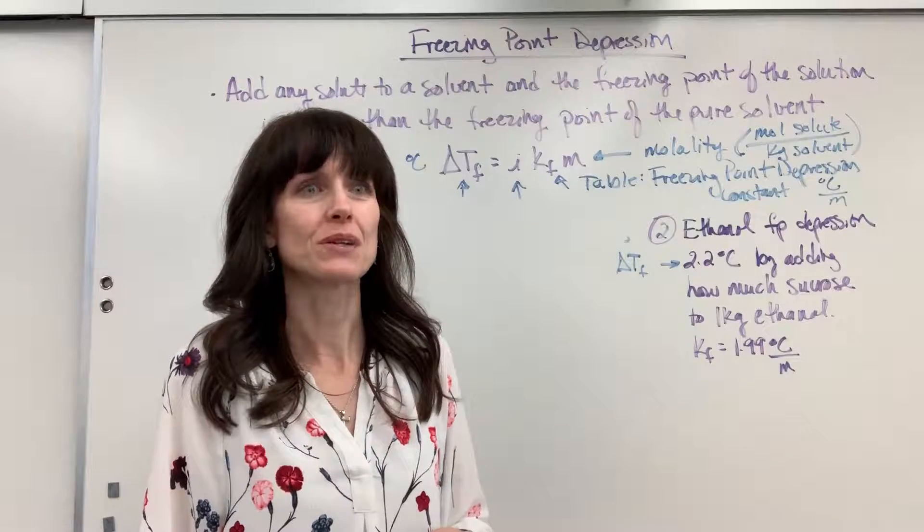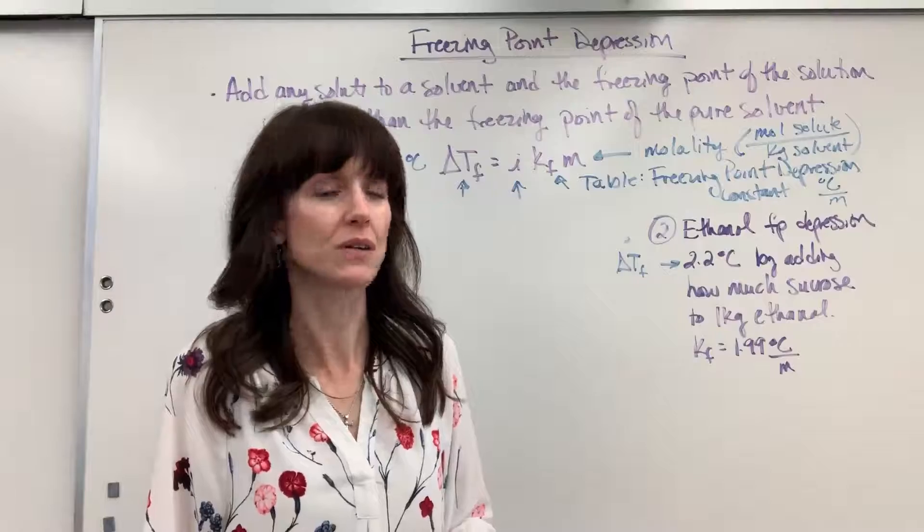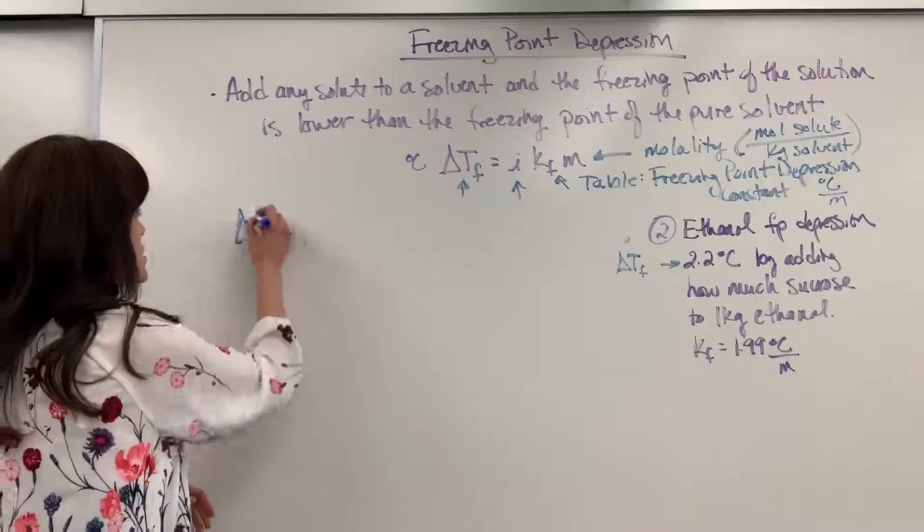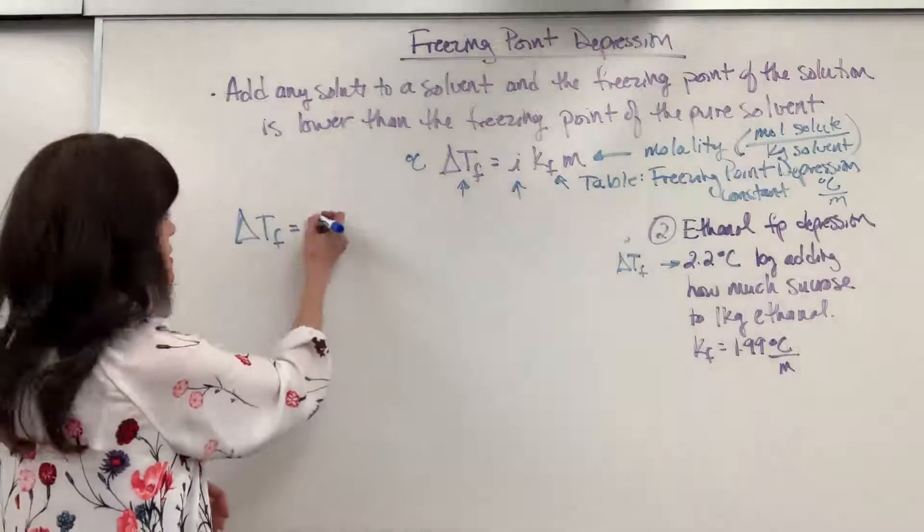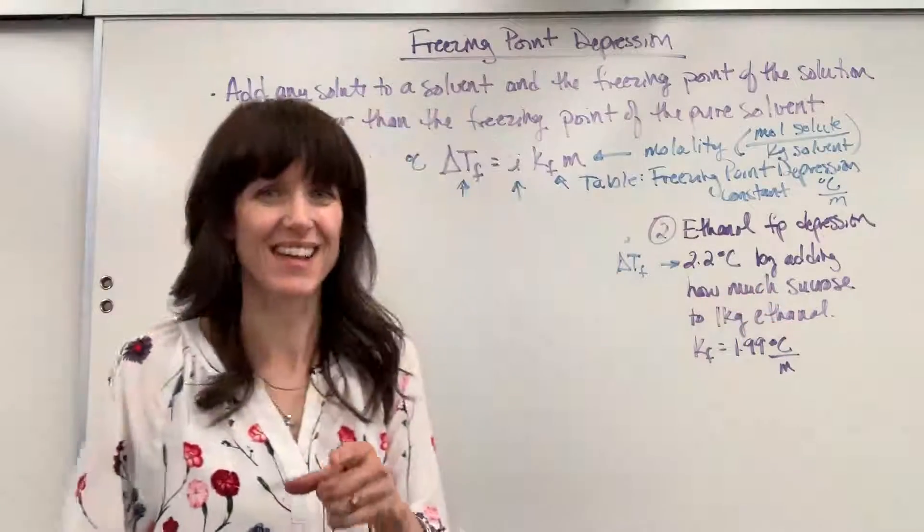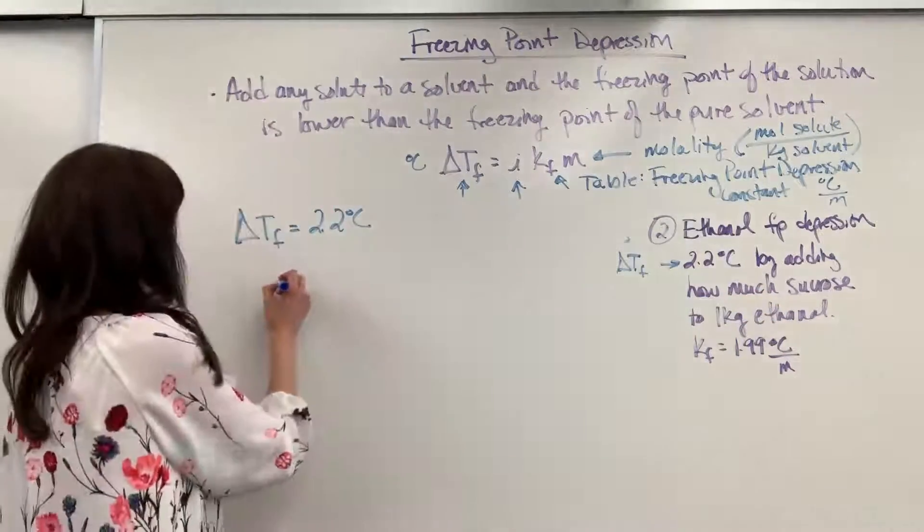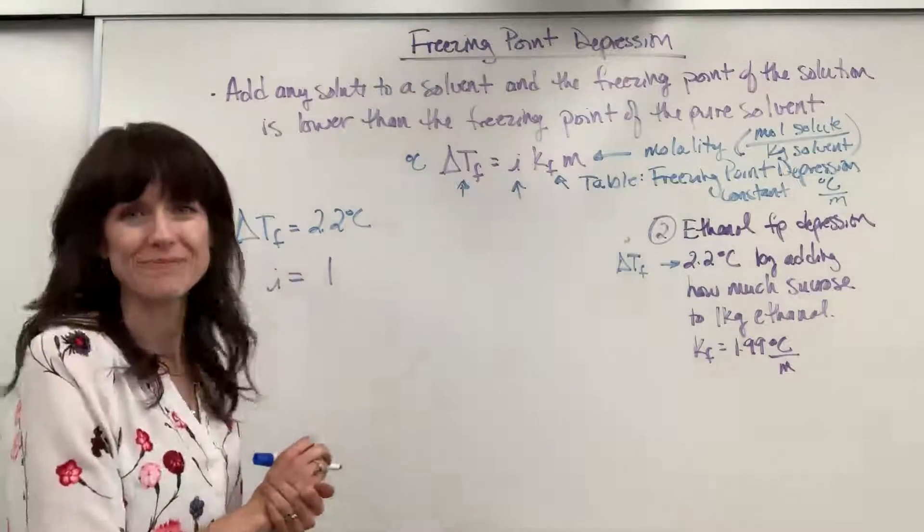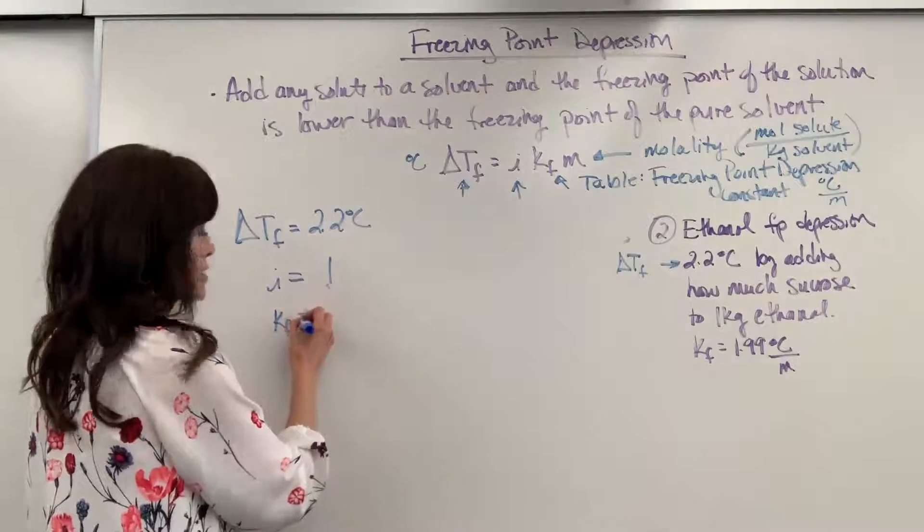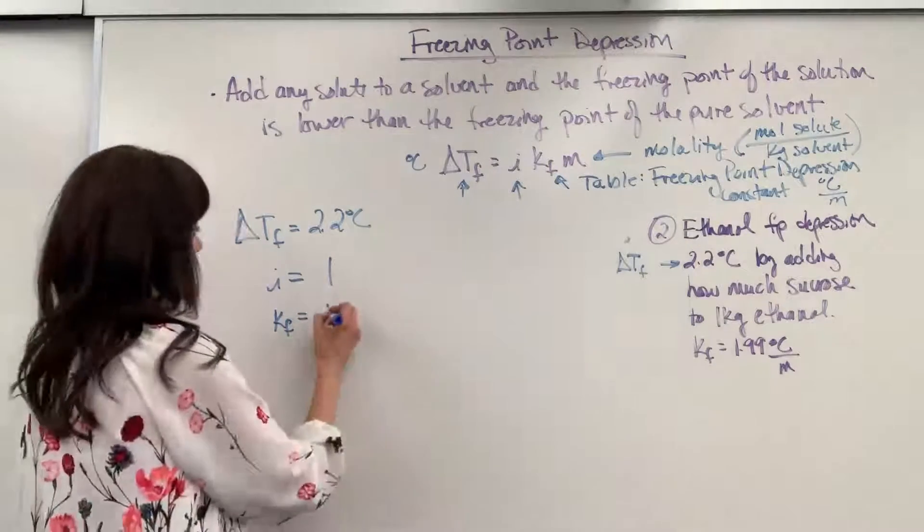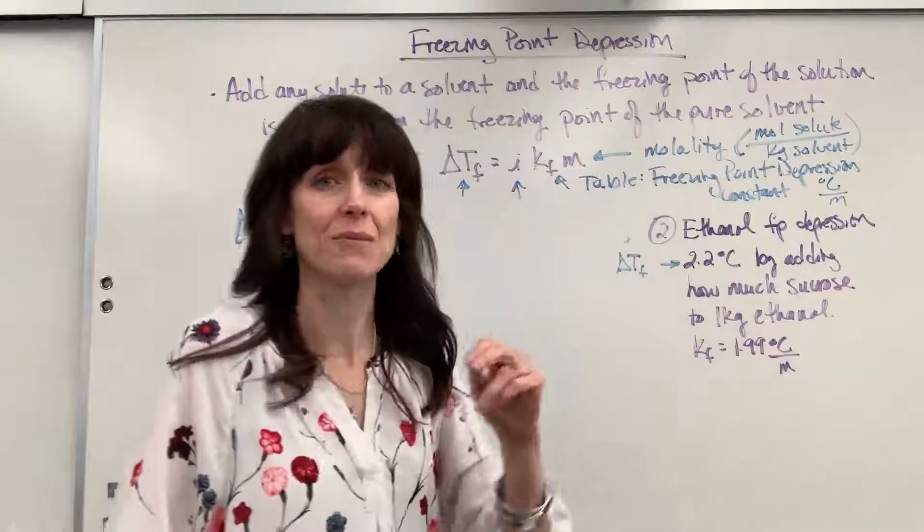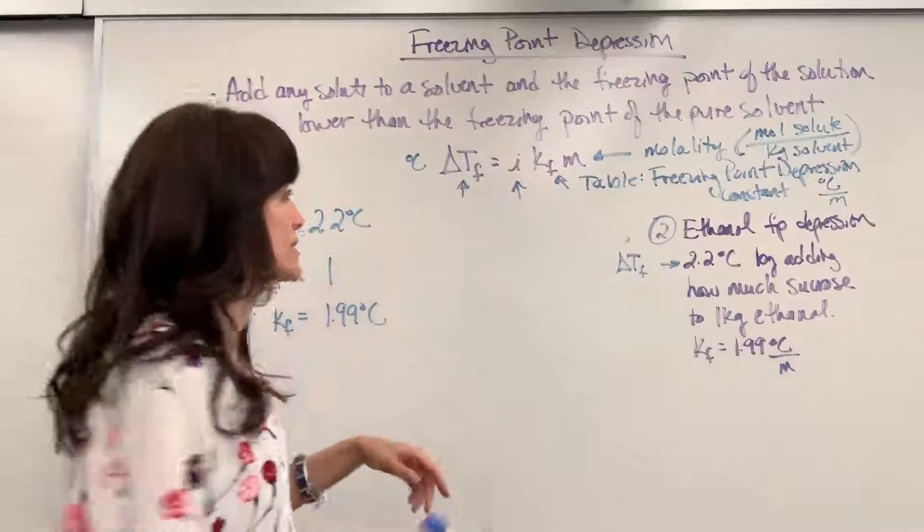How much sucrose? Notice the word amount, amount of sucrose. So if I look at my formula, we've got, I'll start labeling. We've got the change in temperature is the 2.2 degrees C. Sucrose is the non-electrolyte and non-electrolytes. What's the particle? How many particles is it? Big fat one. It's just one. We've got the freezing point depression for ethanol is 1.99 degrees C. So what I don't have is M, molality.